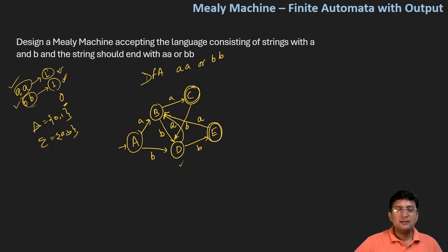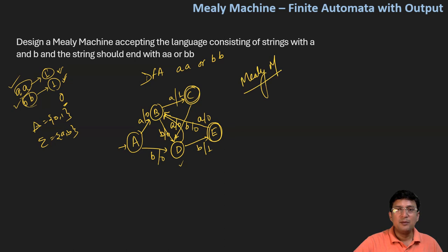Now let's mark the output alphabets. If we are getting AA, we should definitely produce output one. If we are getting BB, we should definitely produce output one. In all other cases, let's produce output zero, and the automata is done. This is the Mealy machine that will produce output one if the string is ending with AA or BB.